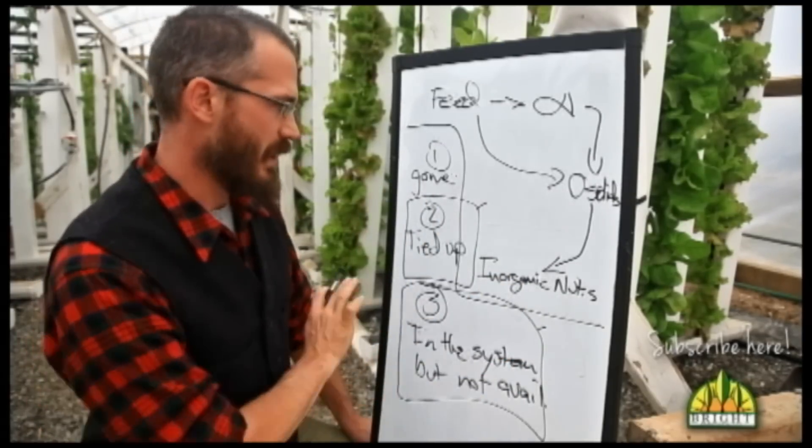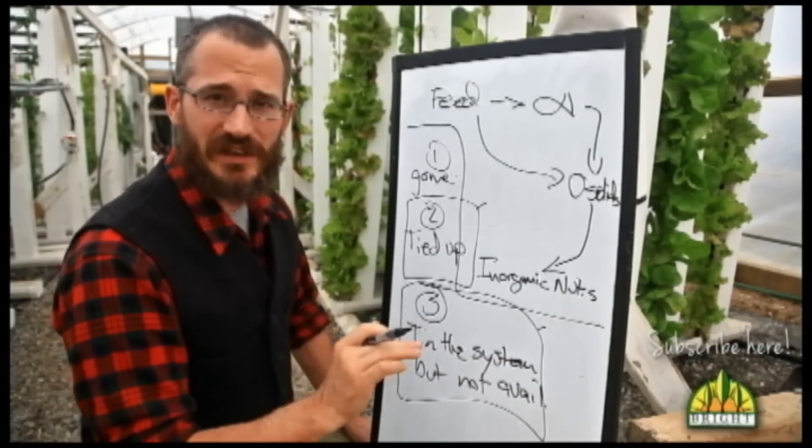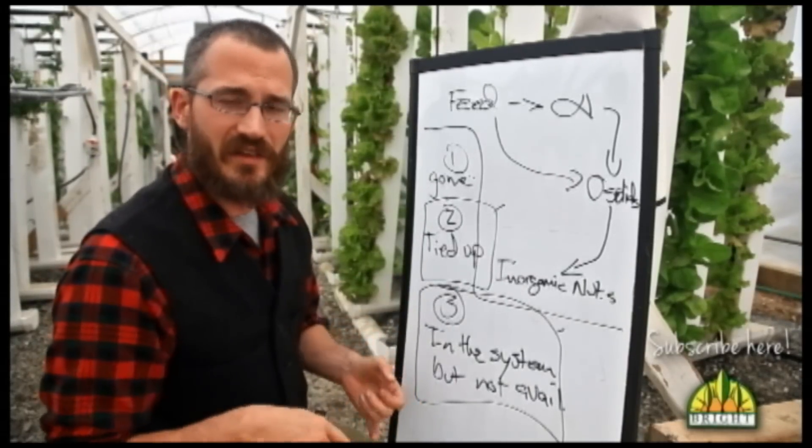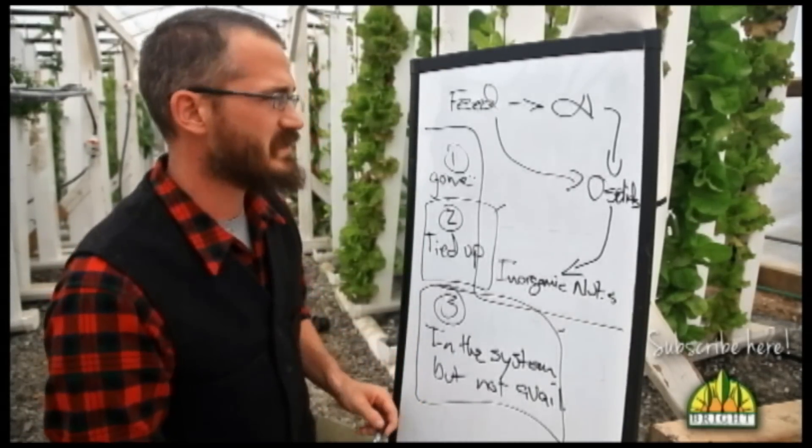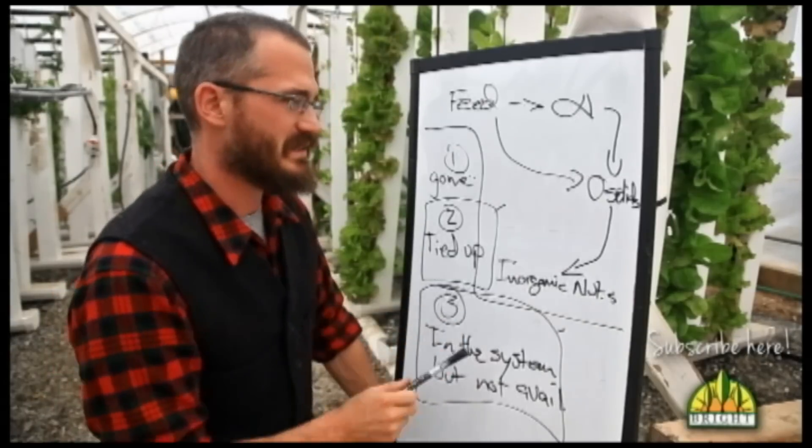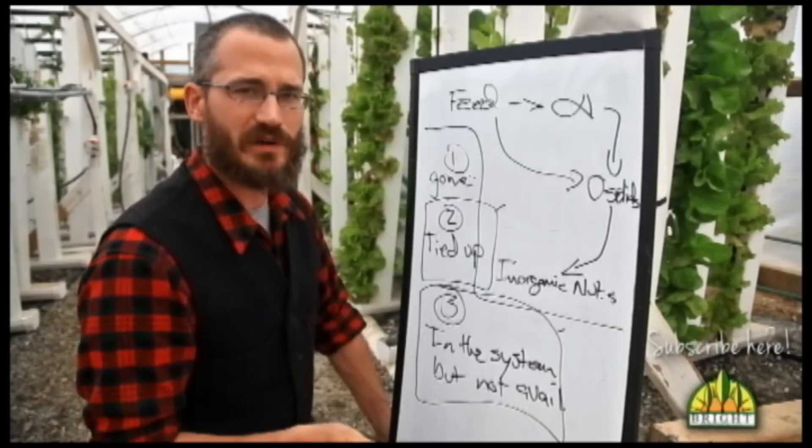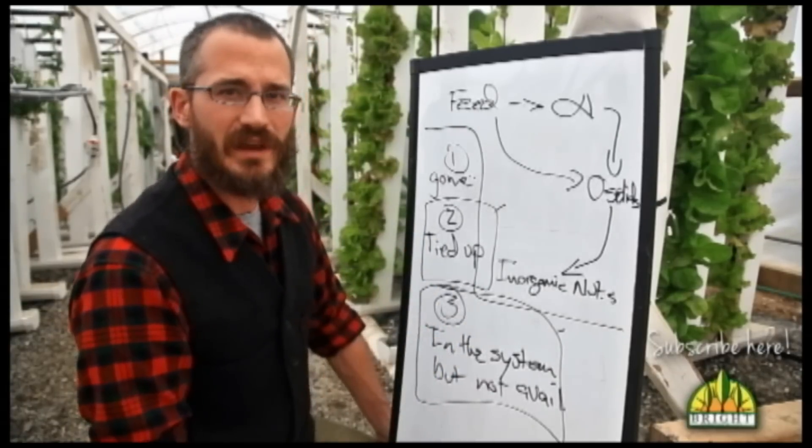And I'm going to talk about all of this in a little bit more depth on an individual basis as we get into each individual nutrient. So as I start to look at all of our major nutrients and minor nutrients, this is an important thing to keep in mind. Because we don't want to just be putting these nutrients into our system. We want to make sure that they're going in and they're ending up available to our plants. That's the end goal.